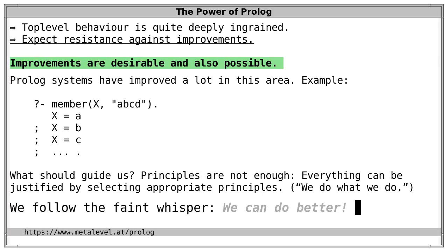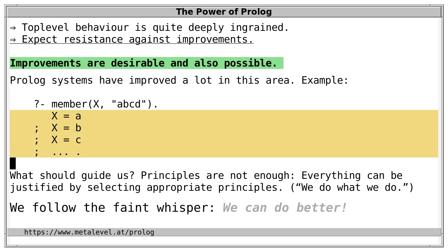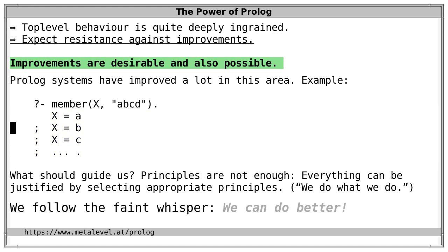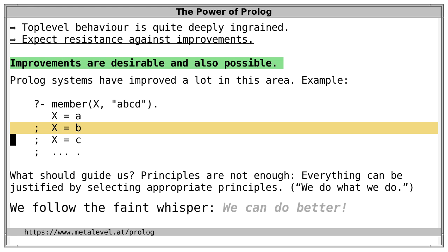How do we find such improvements? It's tempting to appeal to principles such as 'we put goals in and get equivalent goals out.' However, principles alone are not enough, because we can justify anything by choosing appropriate principles. What we rather do is follow the faint whisper that always tells us we can do better. The best Prolog implementers will have very sensitive ears to hear this whisper, and at the same time will implement and defend such improvements with an iron fist. There are many things we can help with — starting by thinking about terminology: is there a better name for what we called a pseudo-solution, and what do we call a disjunct in general?